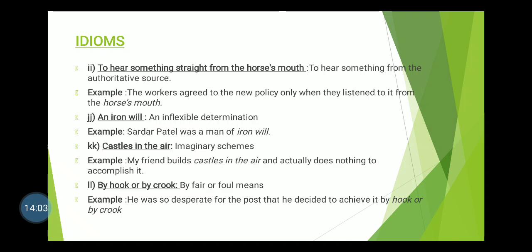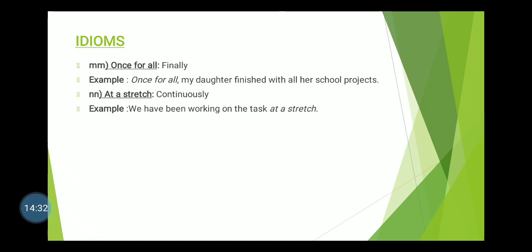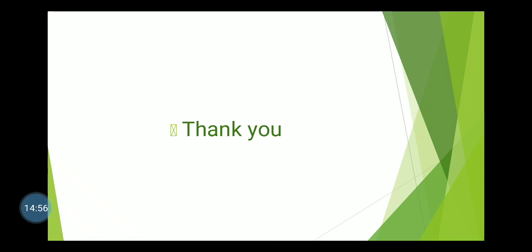Idiom: 'By hook or by crook' — by fair or foul means; in any way possible. Example: He was so desperate for the post that he decided to achieve it by hook or by crook. 'Once for all' — finally; definitively. Example: My daughter finished all her school projects once for all. 'At a stretch' — continuously, without a break. Example: We have been working on the task at a stretch.